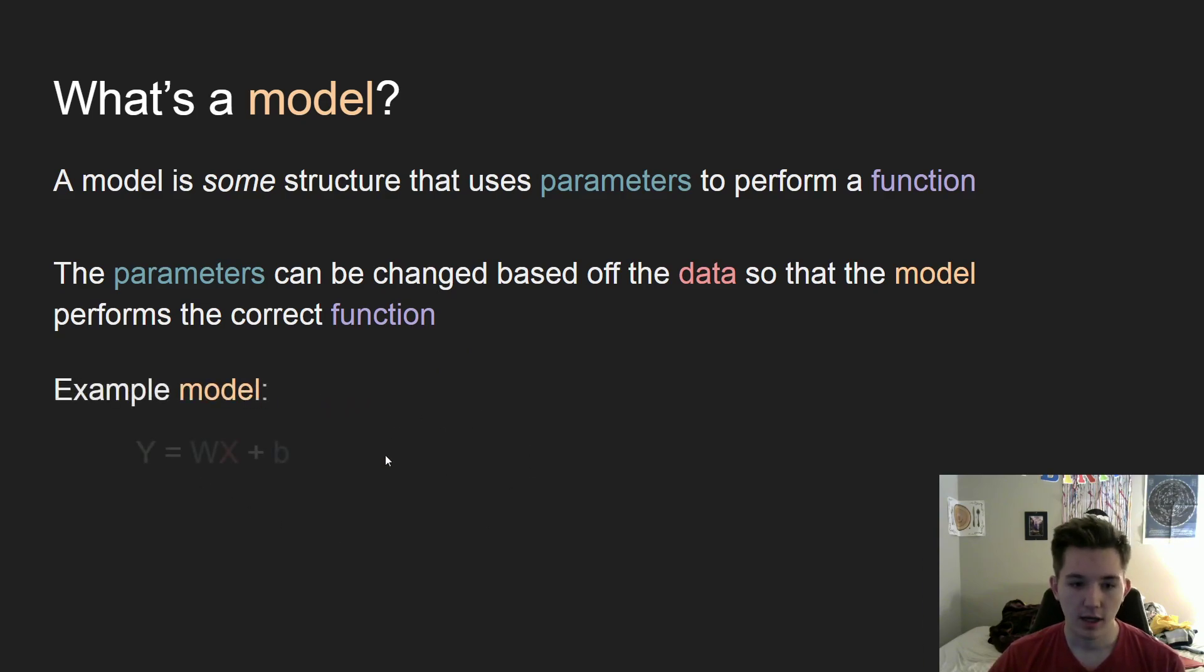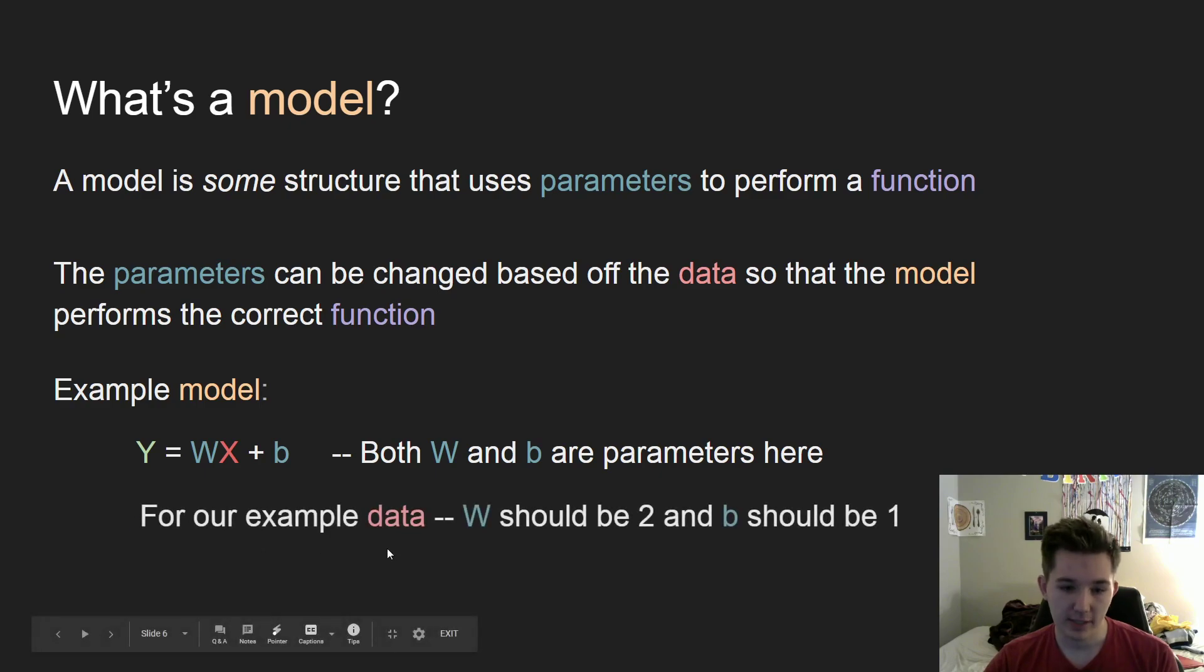So let's look at an example model. Let's look at this one, which is of the same form as the solution we had earlier, which is y equals wx plus b. And in this situation, we have both w and b are parameters. So we can change both w and b to get the correct function out of here.